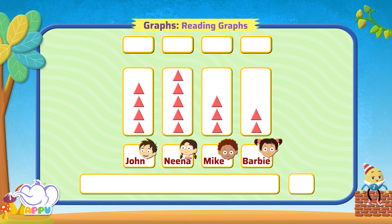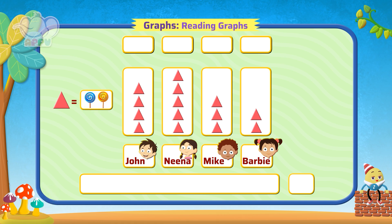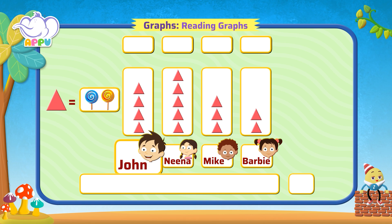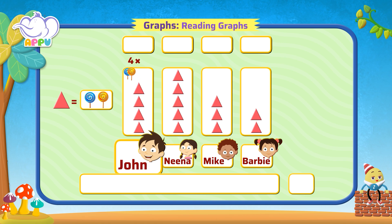It has many triangles. Each triangle represents two lollipops. There are four triangles for John. Since one triangle represents two lollipops, John has four times two, that is equal to eight lollipops.